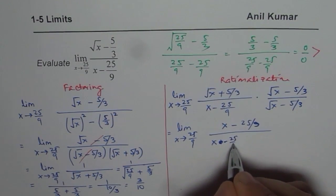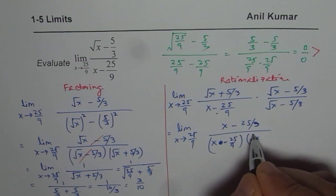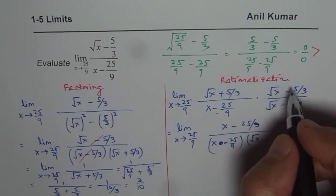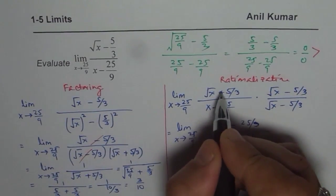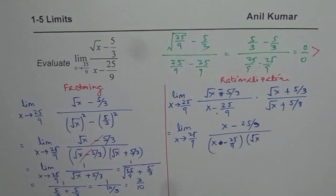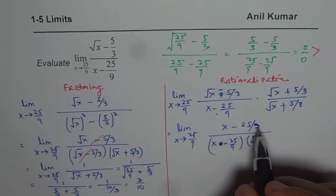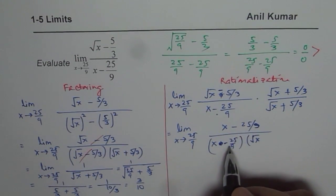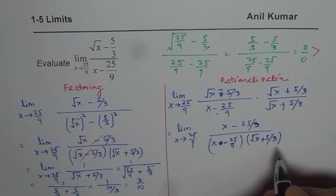And denominator is we have one factor, let me write this, x minus 25 over 9, this factor times square root of x. I should have actually changed, this is minus, sorry, this was minus, this is plus. Yeah, sorry for that mistake, this is minus in the equation we changed. Yeah, so this is minus and this is plus. 5 over 3, correct?